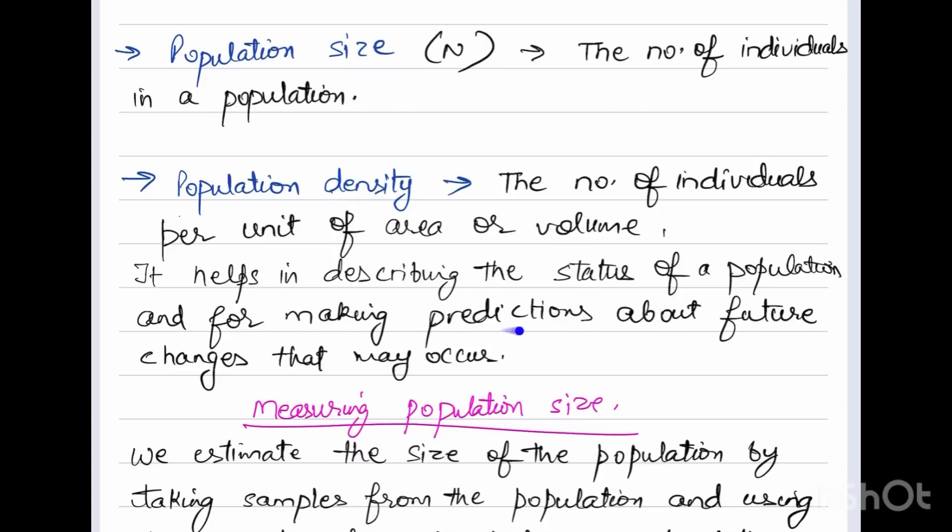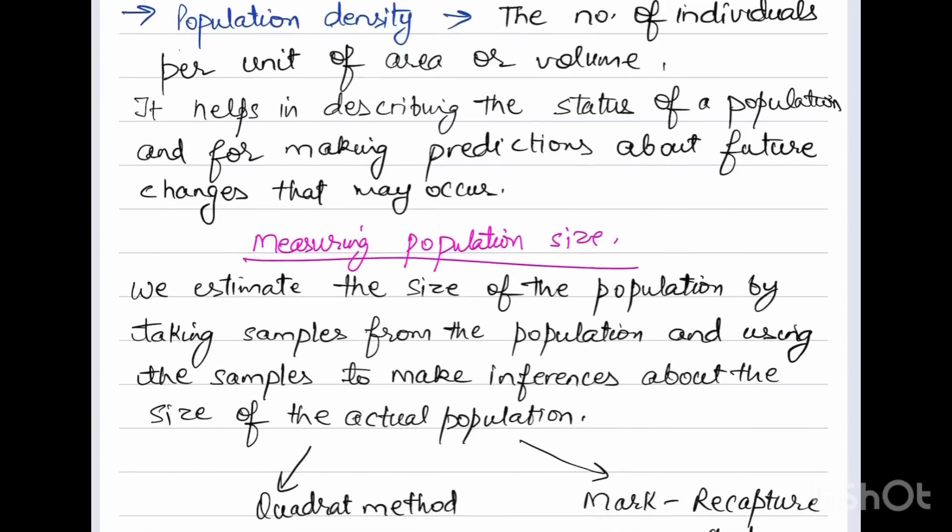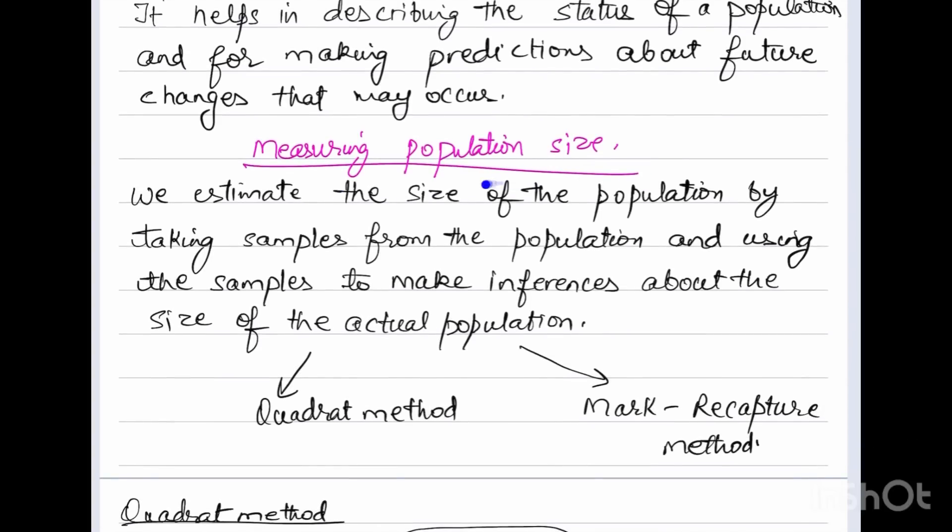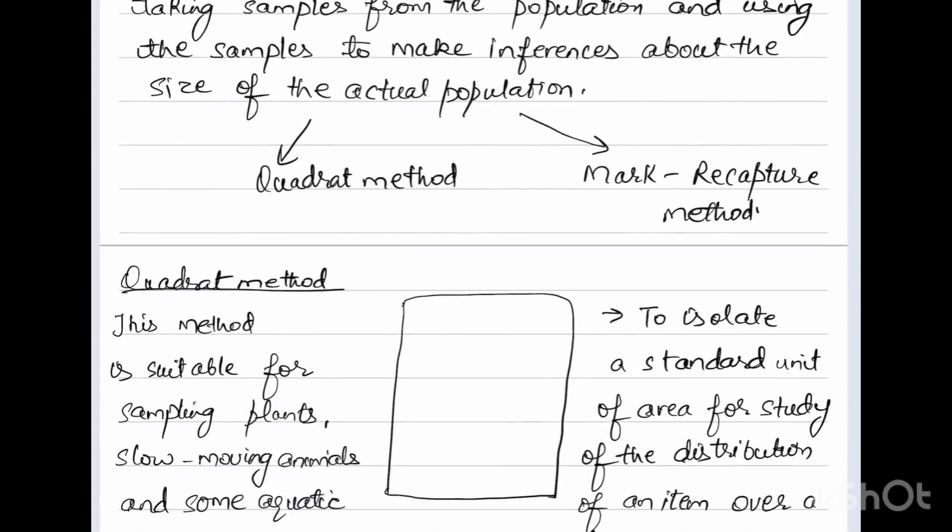How to measure population size? We estimate the size of the population by taking samples from the population and using the samples to make inferences about the size of the actual population. There are two methods: quadrat method and mark-recapture method.